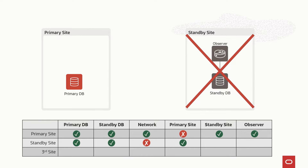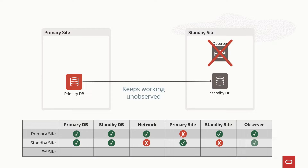Also if I lose the full standby site, this is very bad because I have no more quorum and no standby database to fail over to, but the primary database will still shut down — thinking that the observer and standby are doing a failover. The primary cannot unilaterally say it will keep writing if the observer and standby are still alive somewhere. The primary must protect the configuration by shutting down to avoid data loss or split-brain. So putting the observer on the standby site is generally a very bad idea.